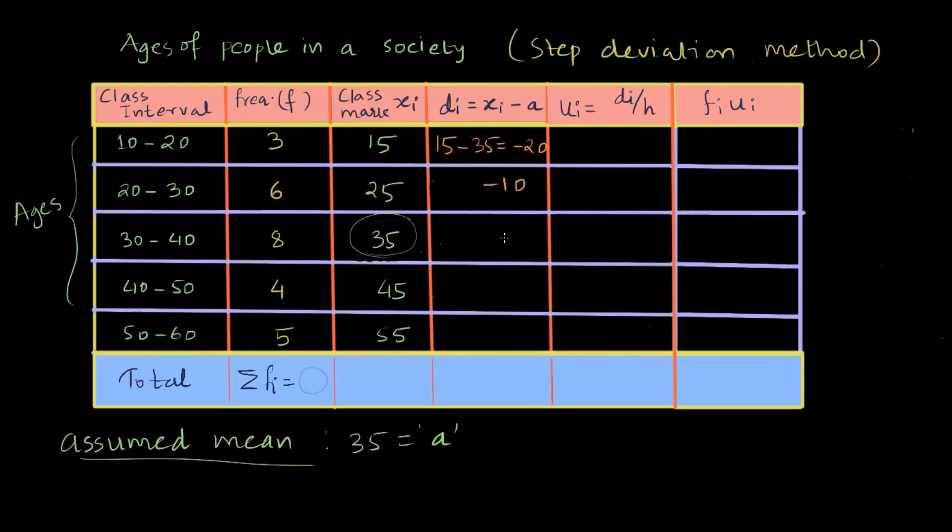Then I will get 35 minus 35, which is zero, and 45 minus 35, that is 10 again. And 55 minus 35 gives me 20.